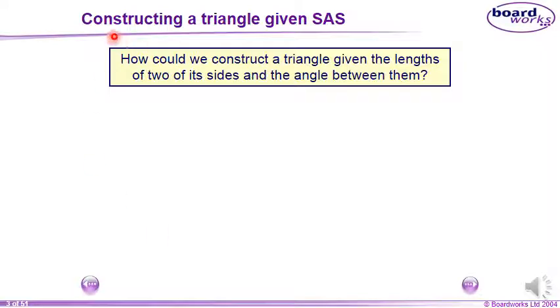Let's start with the first case, constructing a triangle given SAS. How could we construct a triangle given the length of two sides and the angle between them? S is for side, A for angle, and S for the second side.